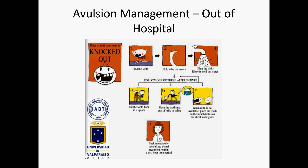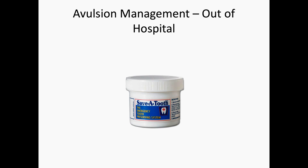If out of hospital, briefly rinse the tooth with water. At this point re-implant the tooth holding it by the crown and have the patient bite down on a handkerchief. If the patient is unable to do this due to a distracting injury or pain, store the tooth in the patient's mouth under the tongue or in milk. Commercial products such as Hanks Balanced Storage Medium are available for use. Avoid storing in water or allowing the tooth to dry.